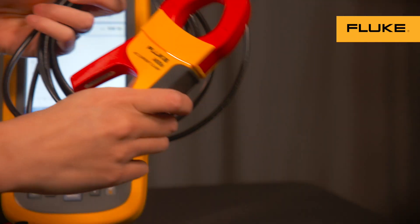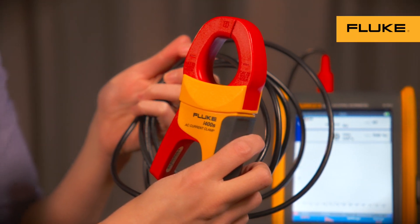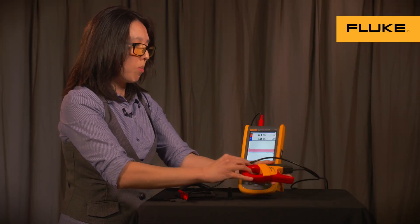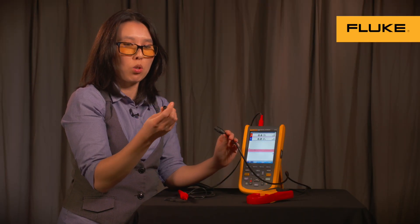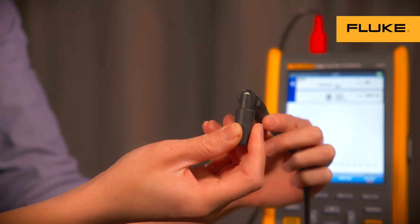This is the I-400S AC current clamp. In order to hook the AC current clamp up to the instrument itself, you'll need the BB120, which is the banana-to-BNC adapter.